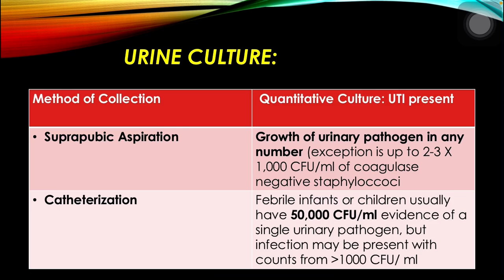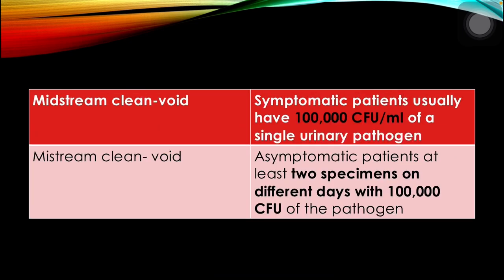For urine culture, suprapubic aspiration is considered positive if there is growth of a urinary pathogen in any number, with an exception of up to 2,000–3,000 colony-forming units per ml of coagulase-negative staphylococci. For catheterization, febrile infants or children usually have 50,000 colony-forming units per ml as evidence of a single urinary pathogen, though infection may be present with counts from more than 1,000 colony-forming units per ml. A midstream clean-void is considered positive in symptomatic patients with 100,000 colony-forming units per ml of a single urinary pathogen; in asymptomatic patients, at least 2 specimens on different days with 100,000 colony-forming units are required.